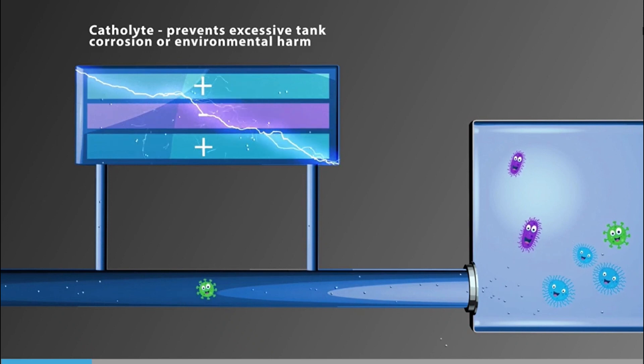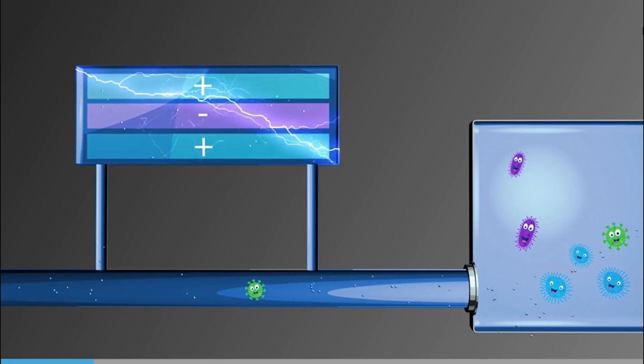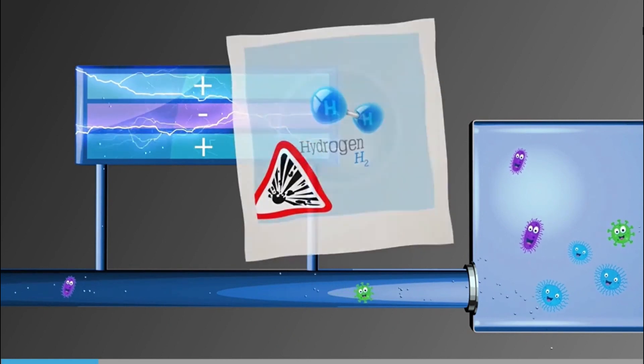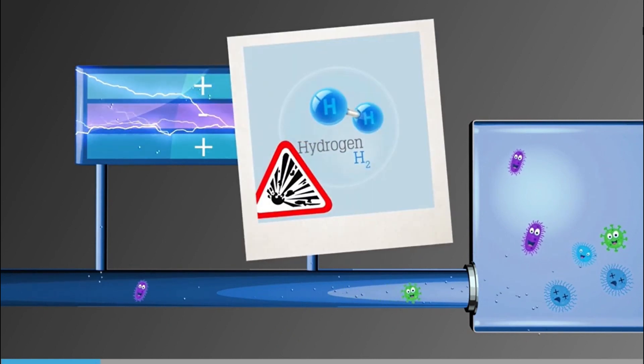Besides anolyte and catholyte, electrolysis can produce hydrogen gas which must be handled on board the ship.